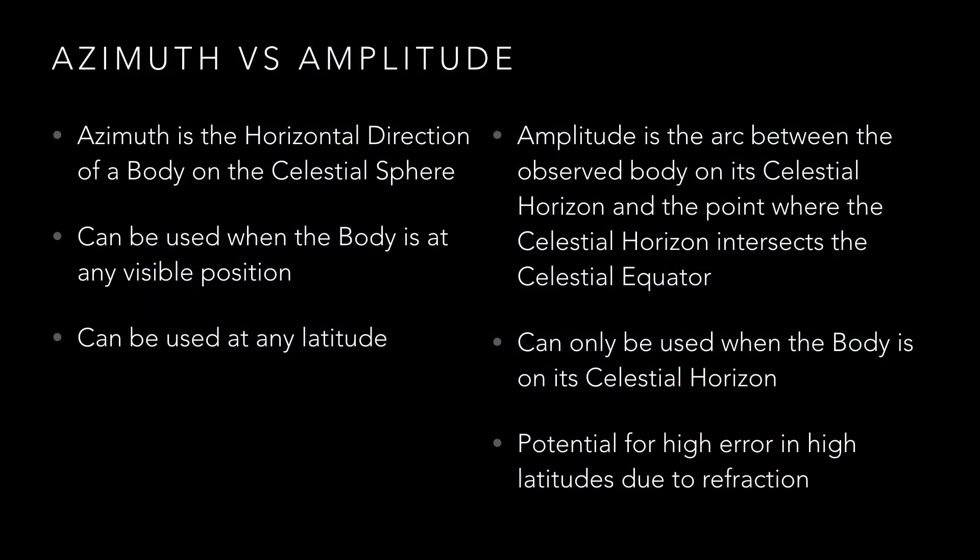In the previous videos in this series I have used the azimuth method to calculate the bearing of the celestial object to then work out our compass error. The azimuth method can be used for any visible celestial body at any position in the sky and is accurate at any latitude.